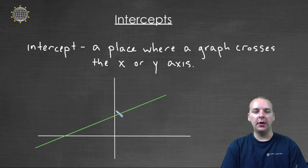So like in this example here, I've got a green line here, and there's two places in particular that jump out to me. Right here is a place that crosses the x-axis. And right here is a place where the graph crosses the y-axis.